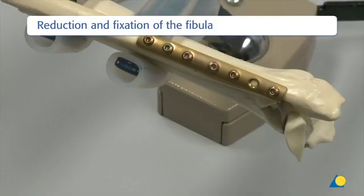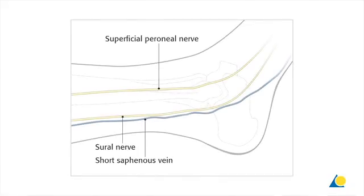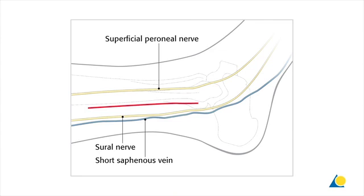The first step is the reduction and fixation of the fibular fracture. The standard approach is a longitudinal lateral incision. A 10 to 15 cm straight lateral incision is made in line with the fibula. Care is taken to avoid injury to the superficial peroneal nerve, which lies very closely anteriorly, especially in the proximal part of the incision.